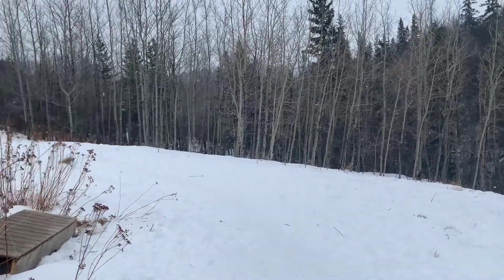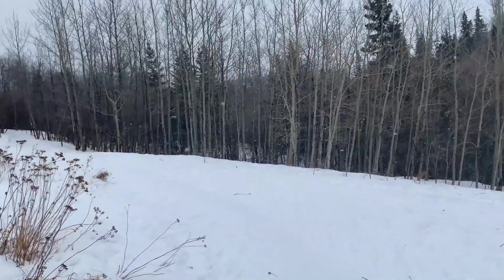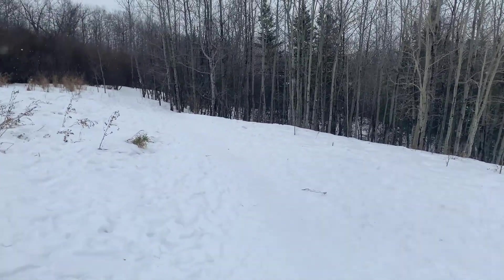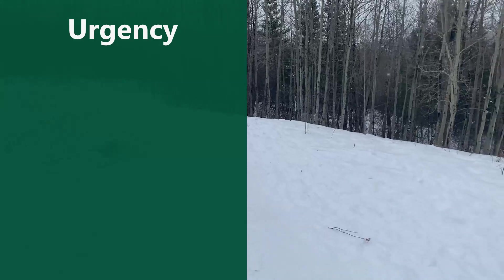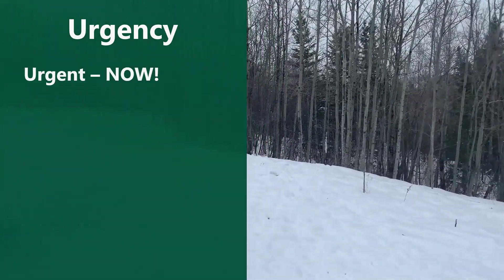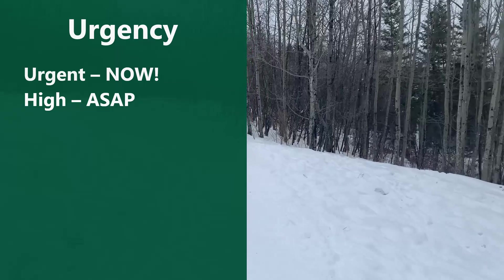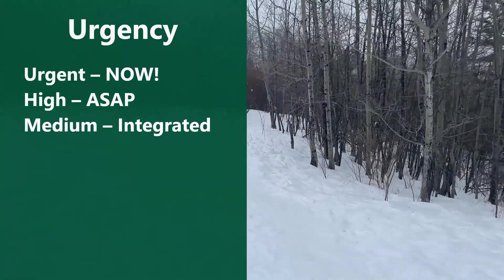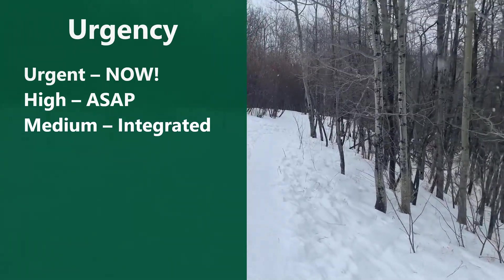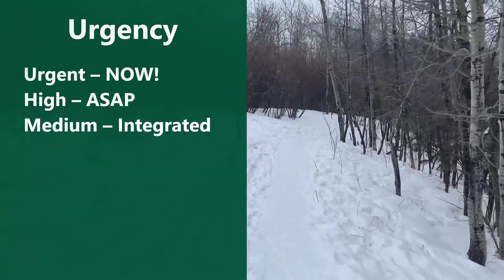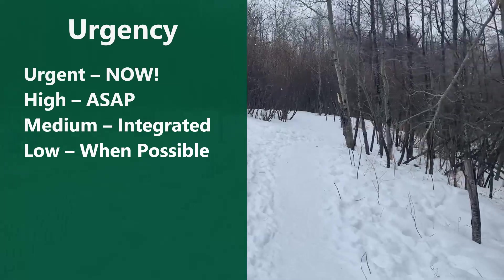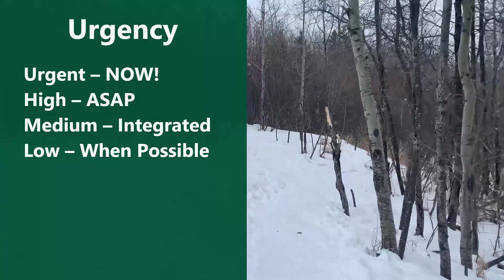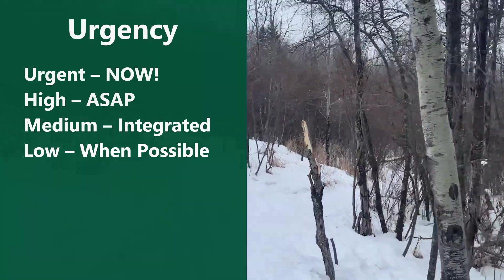Let's quickly talk about priorities. Personally I like a matrix of 16 priorities. First you sort your bug list by four urgencies: urgent, meaning drop everything and do it now; high, meaning work on this as soon as you can; medium, where you allow the person to integrate it into their other work; and low, which is something you do after everything else is done or look for opportunities to catch in sweeps.